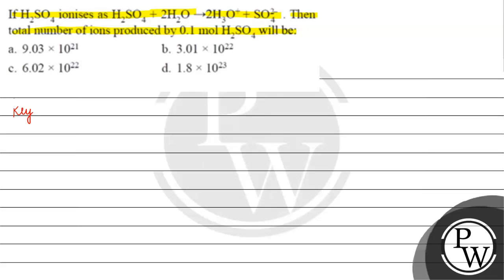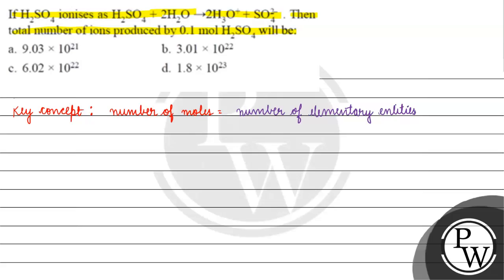Now let's see the key concept for this question. In the question, H2SO4 ionizes. The key concept is: number of moles is basically equal to the number of elementary entities divided by Avogadro's number. Avogadro's number is 6.022 into 10 raised to the power 23 mol inverse.